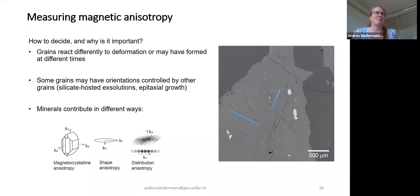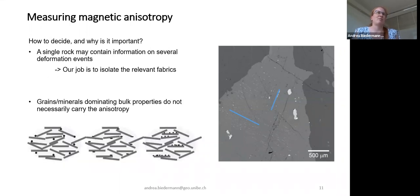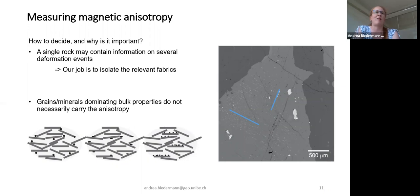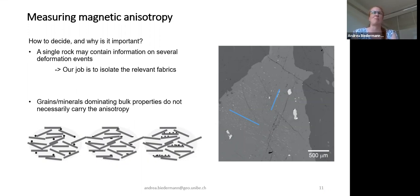At the same time, this makes it very interesting — a single rock contains information on several different elements, and our job, if it is to reconstruct the rock's tectonic history, is to isolate all these relevant fabrics. An important point: the first thing we might want to do is measure the bulk properties, run rock mag experiments, and find out, for example, that this rock contains magnetite. But that doesn't necessarily mean magnetite will also carry the anisotropy.